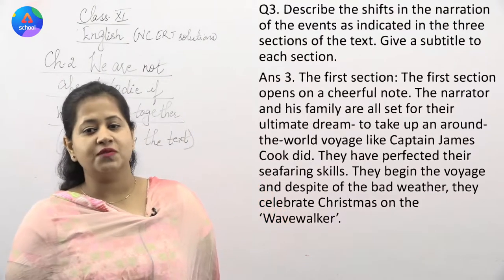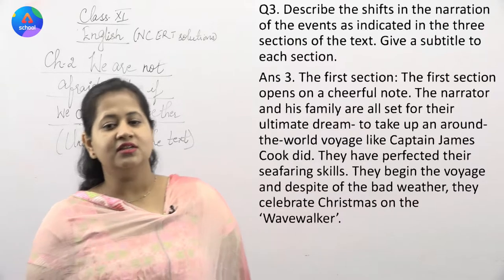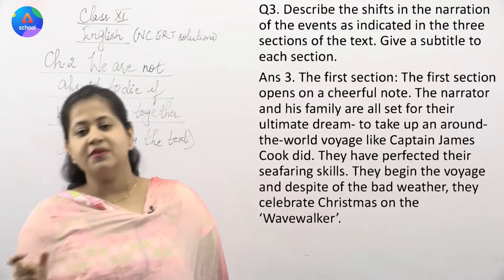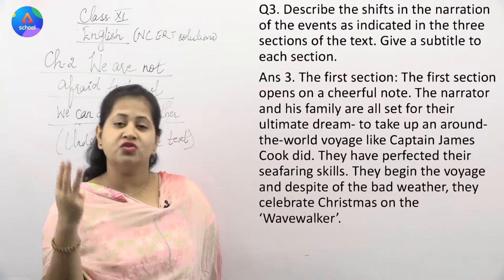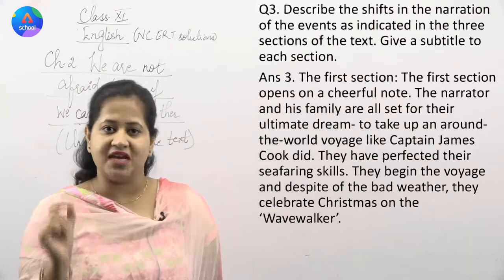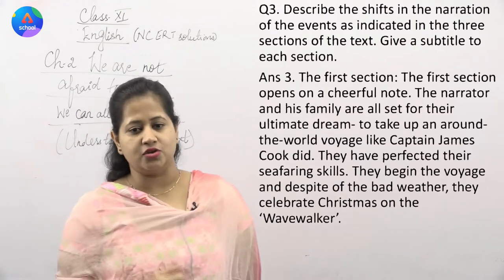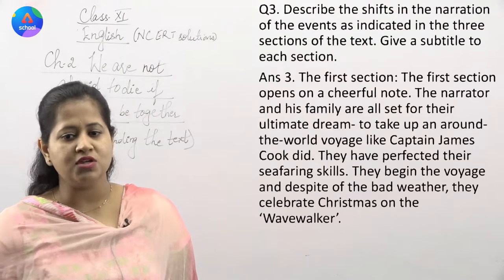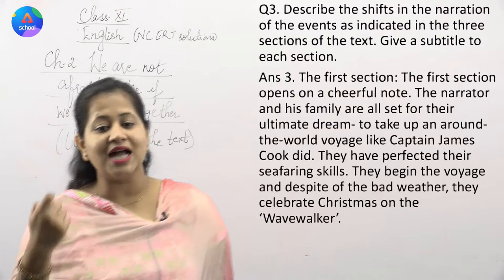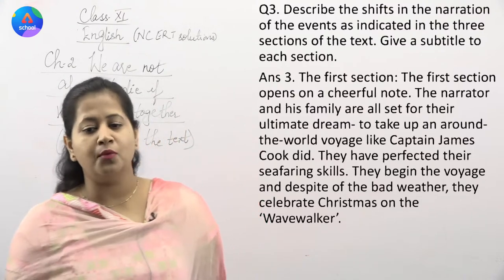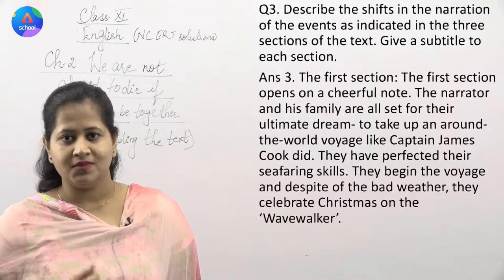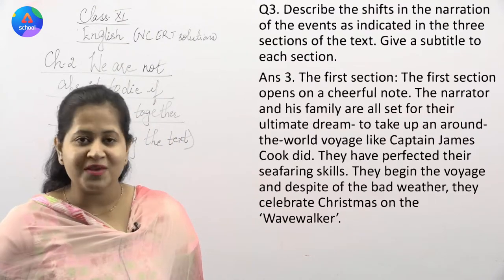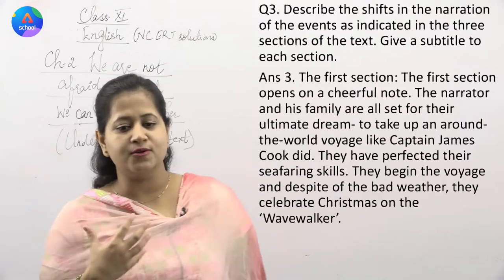The third question: 'Describe the shifts in the narration of the events as indicated in the three sections of the text. Give a subtitle to each section.' The chapter is divided into three sections. The first section opens on a cheerful note — the narrator and his family are all set for their ultimate dream to take an around-the-world voyage, like Captain James Cook did. That's what the narrator wants to do.